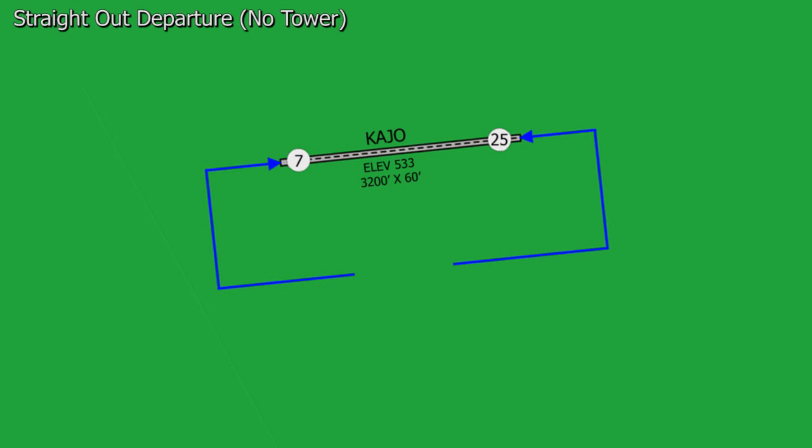The first departure is a straight out departure. This departure is exactly the same as at a towered airport — you fly straight for about two miles and then you resume your own navigation.